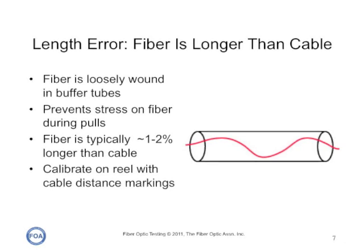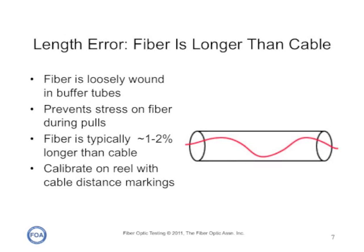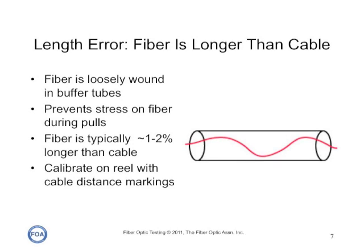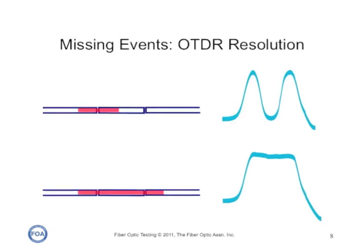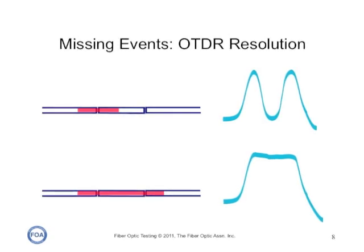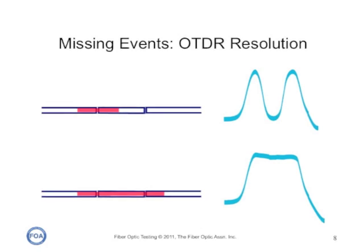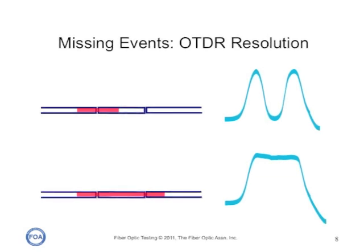That means that if you measure 10 kilometers, the actual length is going to be less two percent. So if you're trying to find a break in a fiber, you always look before the distance that the OTDR tells you, because that's where the actual cable length will be. The OTDR can completely miss some events if they're close together. Because the OTDR pulse width is variable, that distance can change. But if you have two events that are close together and a wide pulse width, they will be completely lost. Thus, you have to be careful to always try to use the shortest possible pulse to get the best possible resolution.